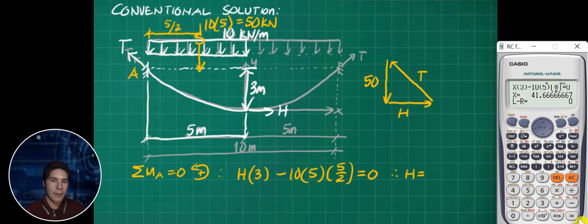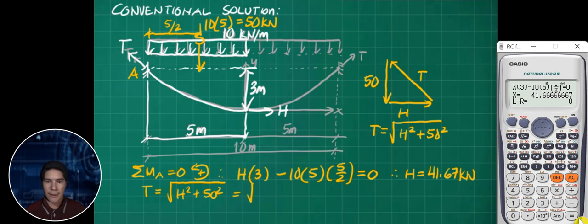We get the value of 41.67. Therefore, using the force polygon, the tension is square root of H squared plus 50 squared.